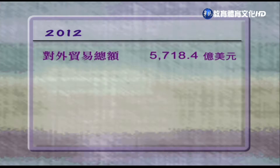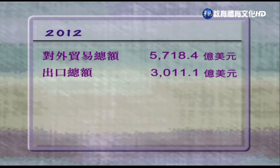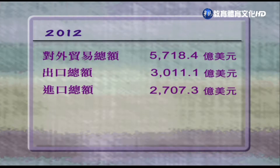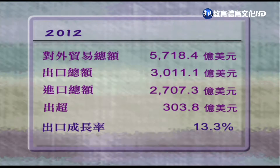台湾是海岛型的经济，经济发展有很高的贸易依存度。2012年我们对外贸易的总额是5718亿美元，出口总额是3011亿美元，而进口是2707亿美元，出超达到303.8亿美元。出口成长率有13.3%，成绩算是很不错。但是我国的企业在内外环境变化非常迅速，国外的挑战越来越高，必须突破传统的贸易做法，分散市场，同时进行国际投资，成为整体性的国际行销营运，才能维持未来的成长跟获利。